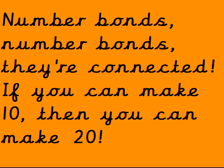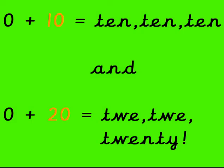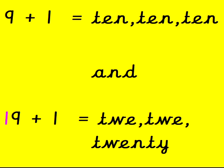Number bonds, number bonds, they're connected. If you can make 10, then you can make 20. 0 add 10 is 10, and 0 add 20 is 20. 9 add 1 equals 10, and 19 add 1 is 20.